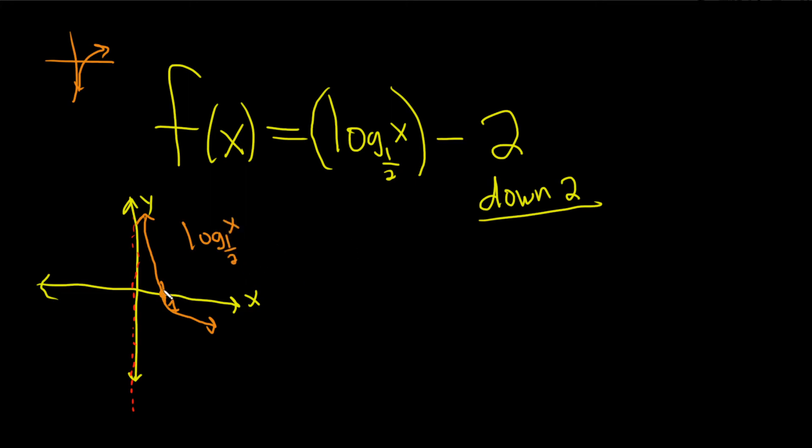And so now we want to take it and shift it down by 2. So this point here is 1 comma 0, so it's going to go down by 2. So let's draw it over here. Here's the y-axis, here's the x-axis.